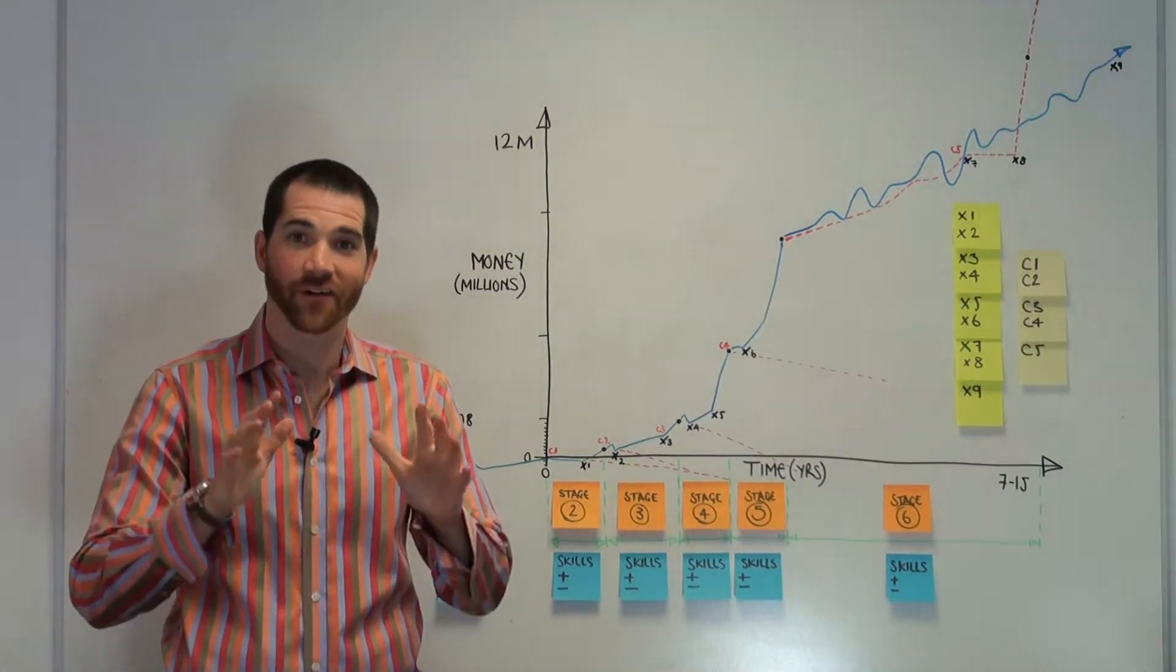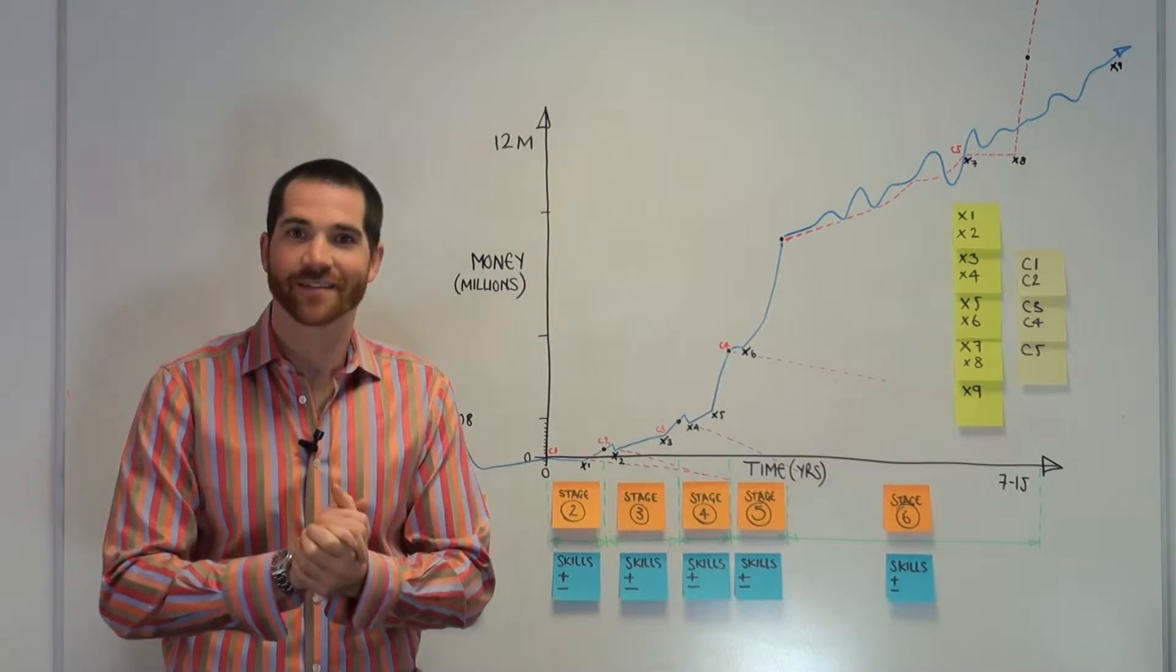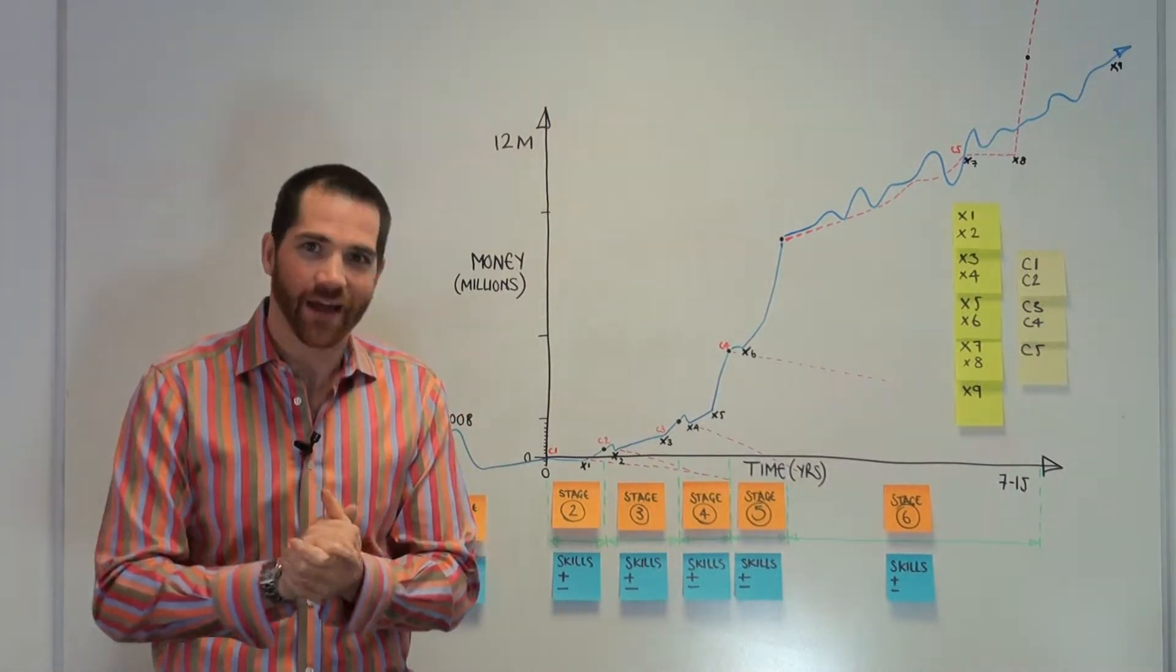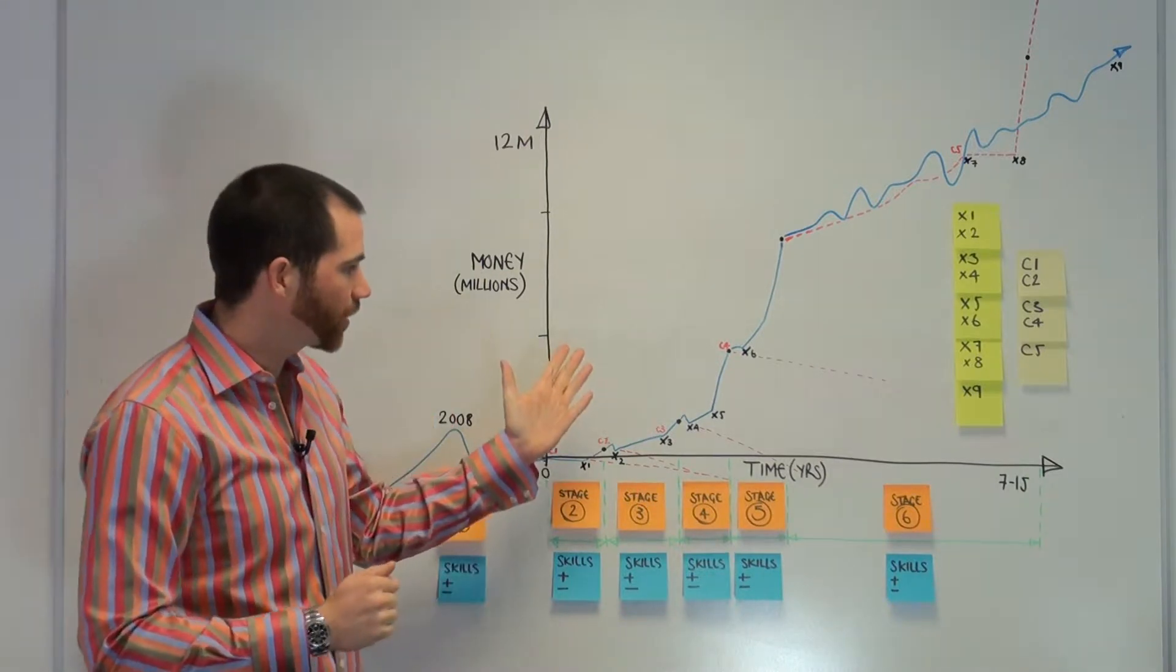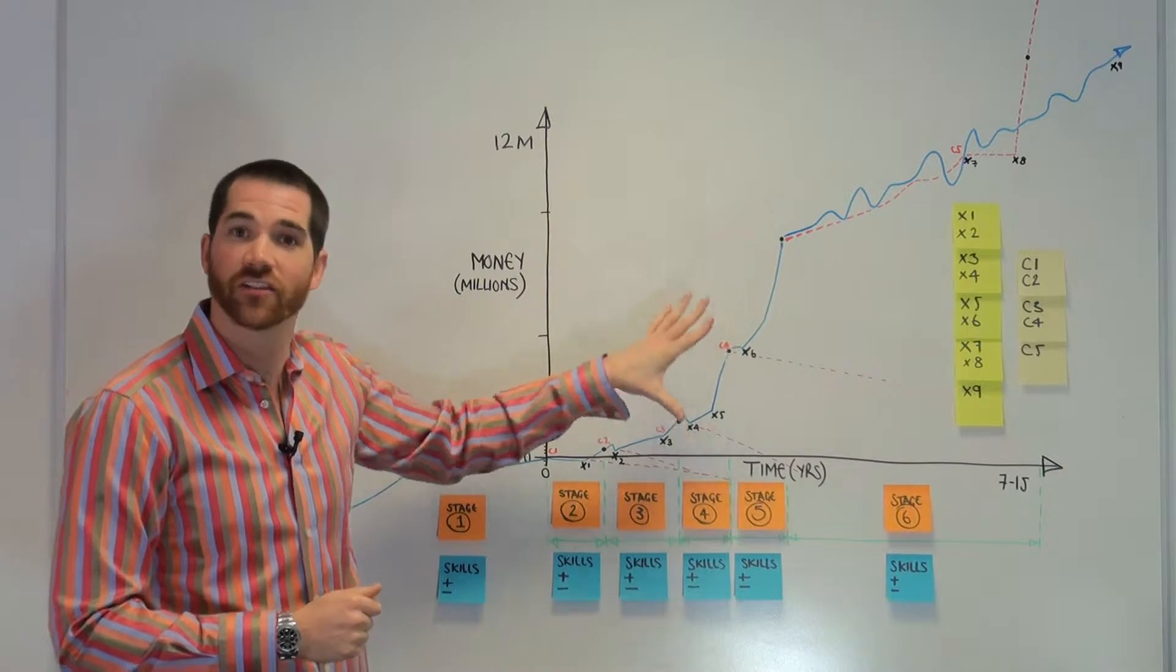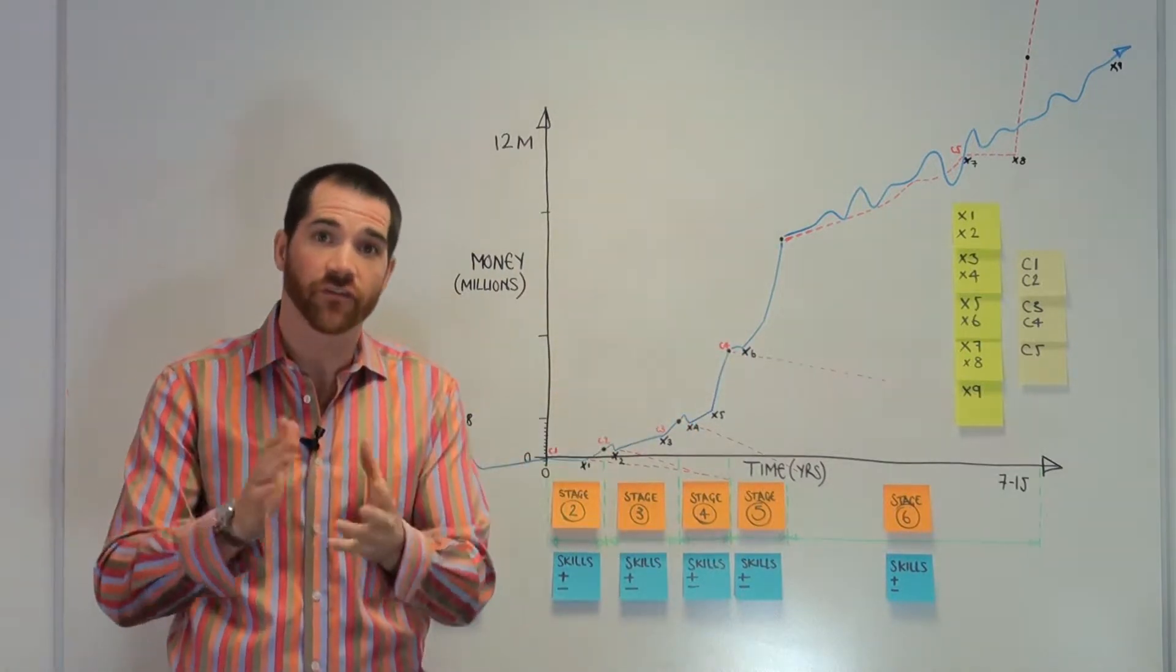Hi, it's Rob Moore here from Progressive Property. You might be very surprised to see me working with Simon Zucci, and I'll explain how that came about in a moment. You might also be wondering what this graph or model is, and I'll explain this as well in this very short video. Thank you for watching.